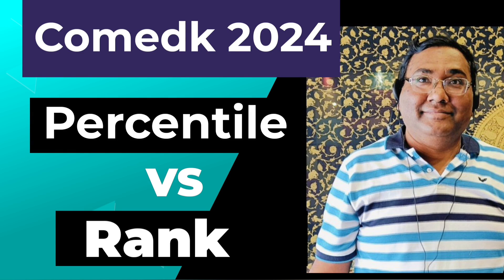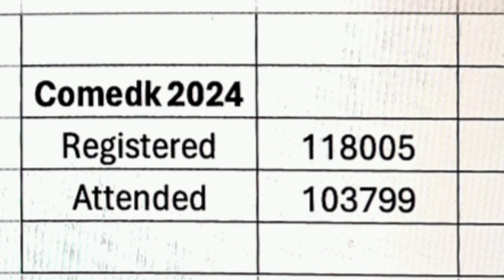This video covers the important topic of percentile versus rank for COMET-K. The rank card will show both your percentile, calculated based on your shift, and your rank, calculated based on that percentile. This year, 1 lakh 18,005 students registered and 1 lakh 3,799 actually attended the exam, so 1.03 lakh students will receive a rank card.